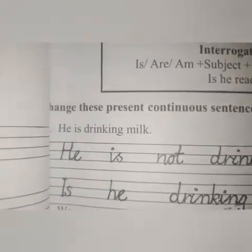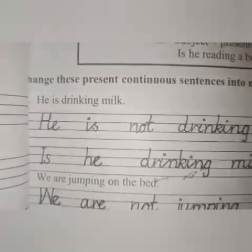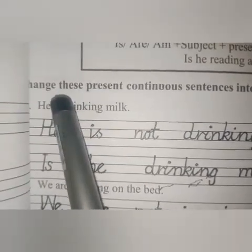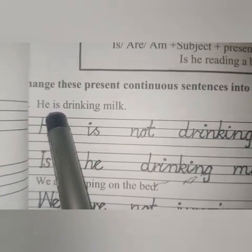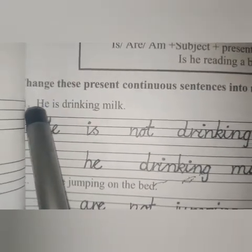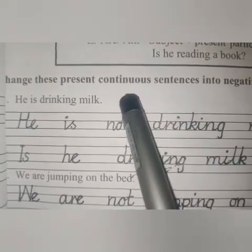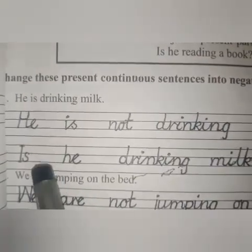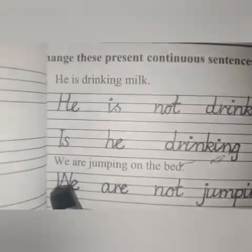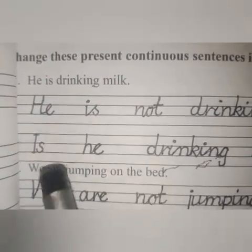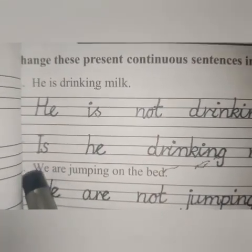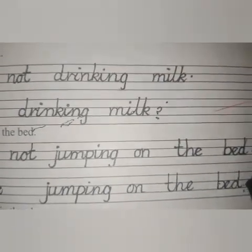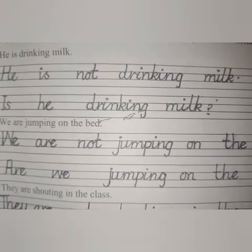Now we are going to make another interrogative sentence. 'He is drinking milk.' Is is his helping verb, so we write: 'Is he drinking milk?' The helping verb comes at the start of the sentence. It is easy, students — tell me, is it easy? Yes! I know you are very intelligent students.